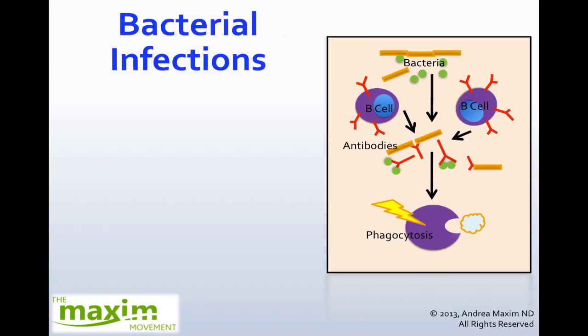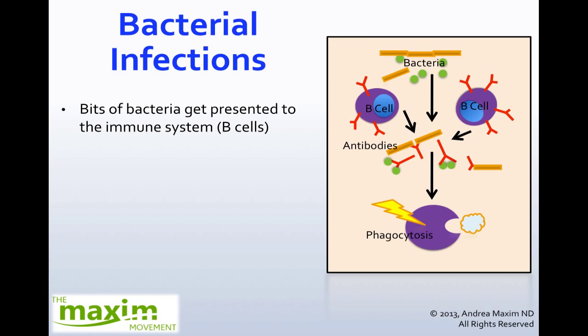With regards to bacterial infections, these tend to trigger what we call the humoral immune response. What's happening is we have little bits of the bacteria getting presented to different types of cells in the immune system. Specifically, what we have here are the B cells. The B cells are what create antibodies, and the antibodies then will attack the bacterial bits, kind of break them apart, and allow the immune system to degrade them.